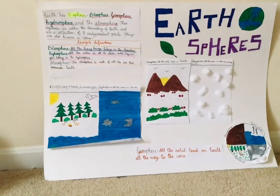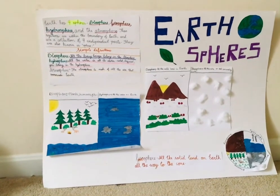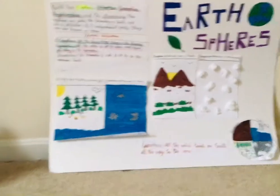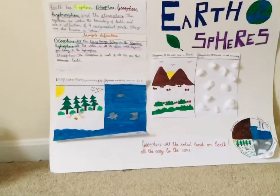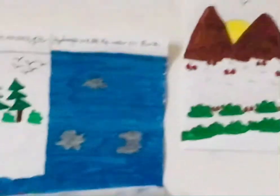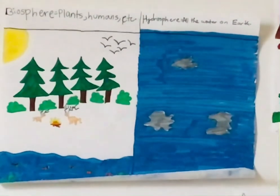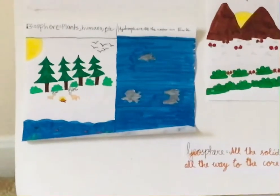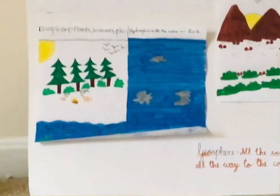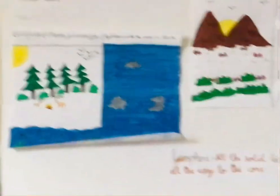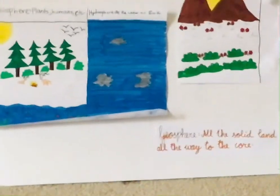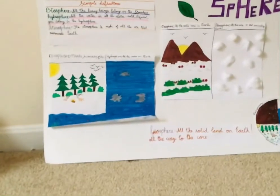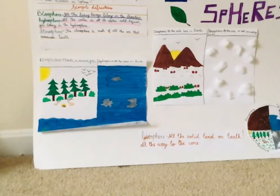Let's start with the biosphere. The biosphere contains all living beings on Earth. As you can see on the poster, there are plants, trees, birds, and deer — and even marine life counts as part of the biosphere.